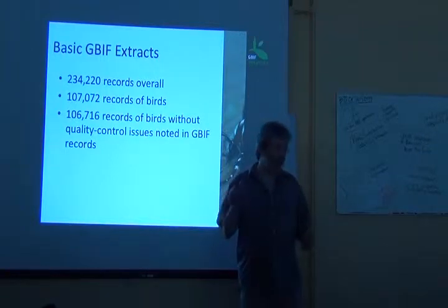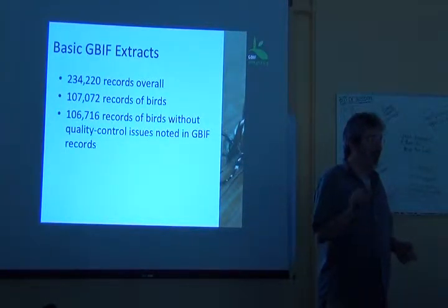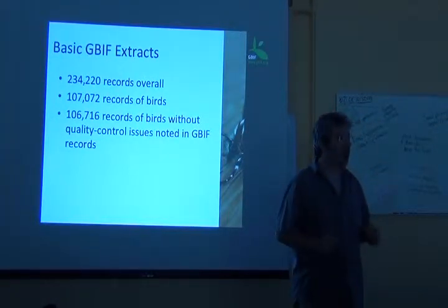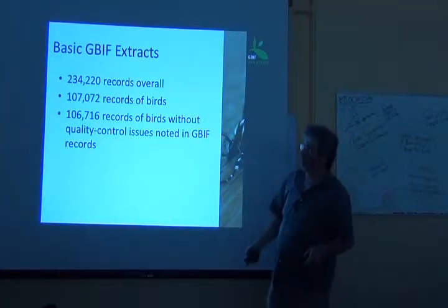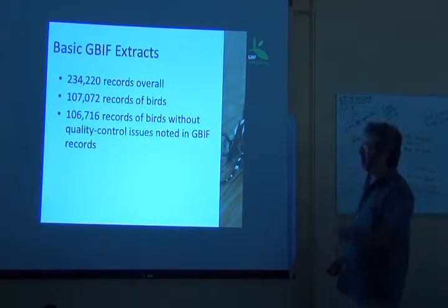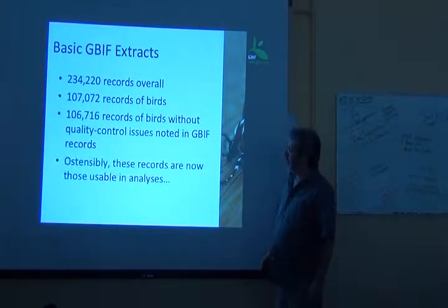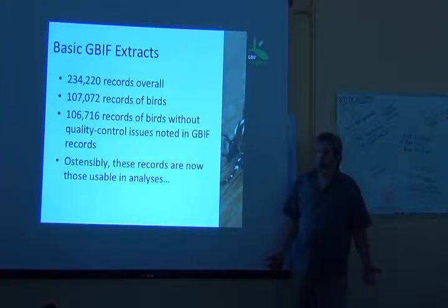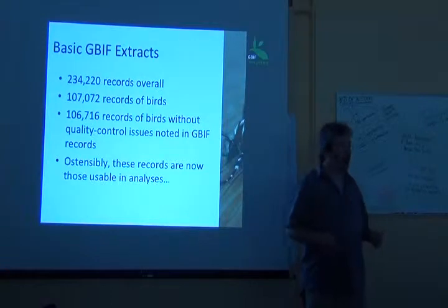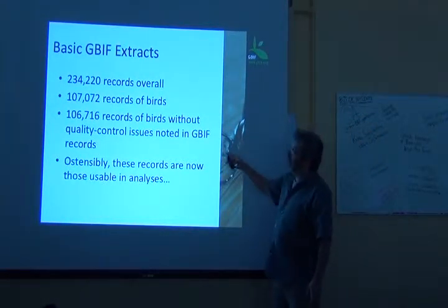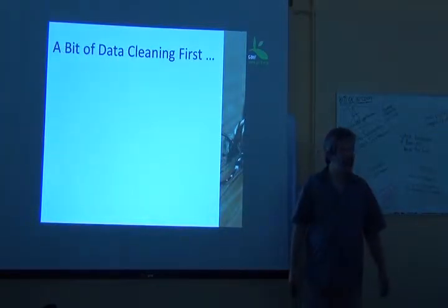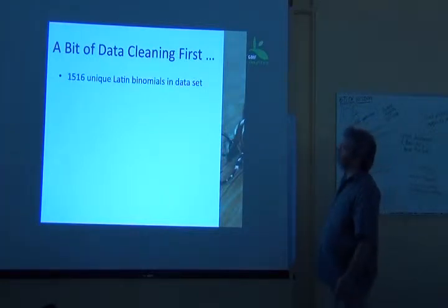Darwin Core fields include some quality control flags — for known problems with ID, known problems with georeference, or just something wrong in the record. I eliminated just a few hundred records by checking those flags. It was about 350 records, pretty trivial loss. If GBIF is a well-behaved data infrastructure giving me data that are ready to roll, I'd like to think those 106,000 records are now ready to stick into an analysis. But I'm careful about these things, so let's do some data cleaning.